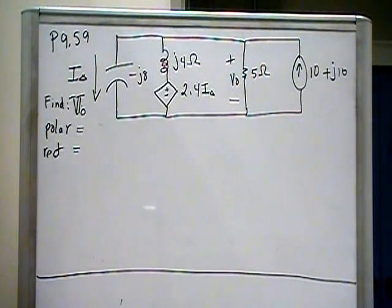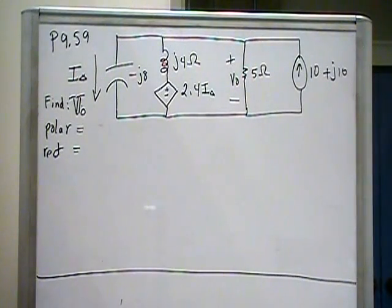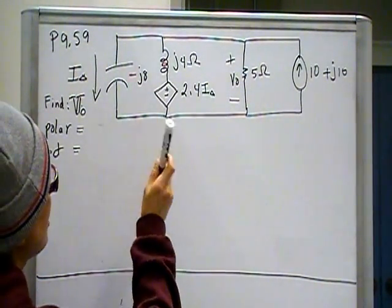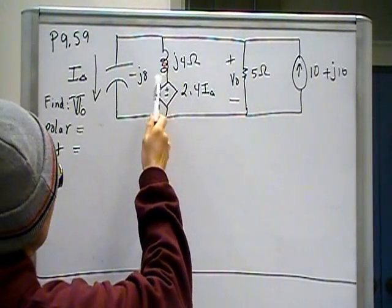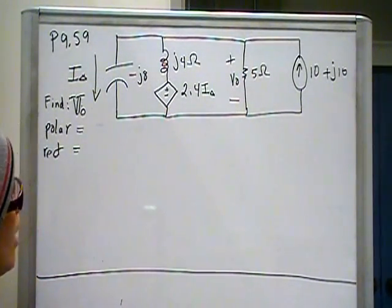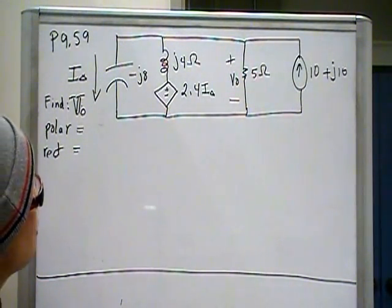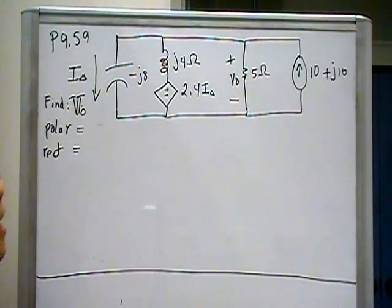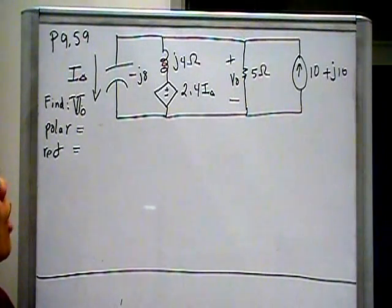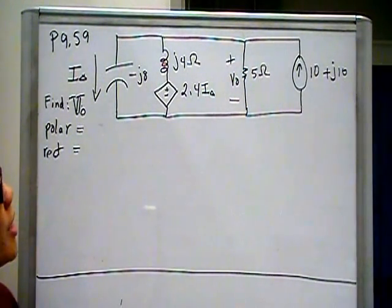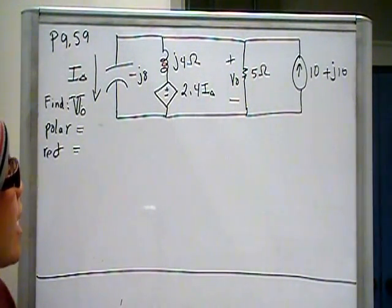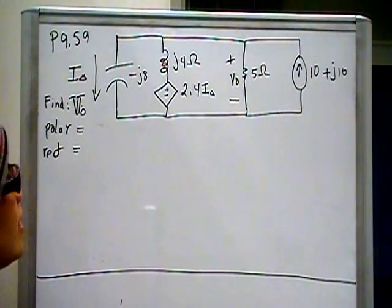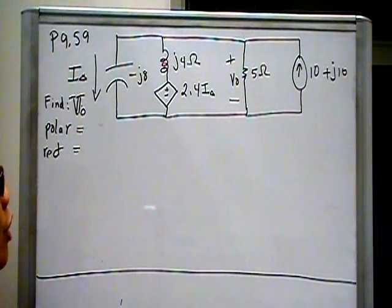The circuit that we're looking at is a capacitor, and that capacitor is in parallel with, first of all, it has impedance of minus J8, and that's in parallel with a series-connected inductor with impedance of J4, and a dependent current source with 2.4 times I delta. And I delta is the current that goes through the capacitor.